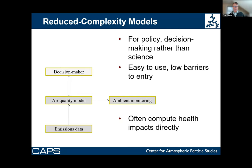The last thing we'll hear about is reduced complexity models, which are really a whole different beast. There's much less emphasis on chemistry and physics. As we move into policy and decision-making, it becomes more important to have something that's easy to use with very low barriers to entry for a decision-maker to evaluate options quickly. A benefit is that it often computes the health impacts directly, so that additional step is incorporated. I'll turn it back over to Mike.